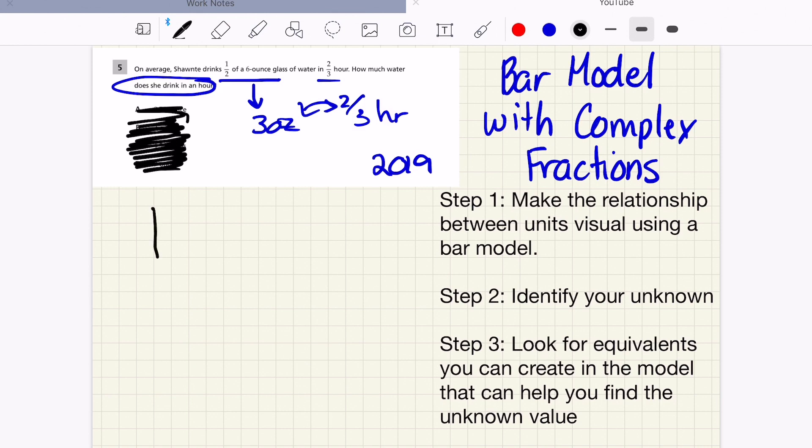And what we know for sure is that Shantae drinks three ounces in two thirds of an hour. So I'm just going to put this together just to represent this is two thirds. So I'm going to draw all three thirds. Just so you can kind of see it, three thirds that are happening right here.